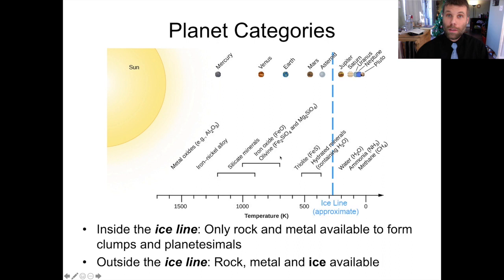Outside the ice line, so farther from the Sun than the ice line, in addition to rock and metal, we also get ice. And because the gaseous components in the protoplanetary disk are so much more numerous than rock and metal, we have a lot more resources available to build clumps and protoplanets, and we end up with bigger structures.